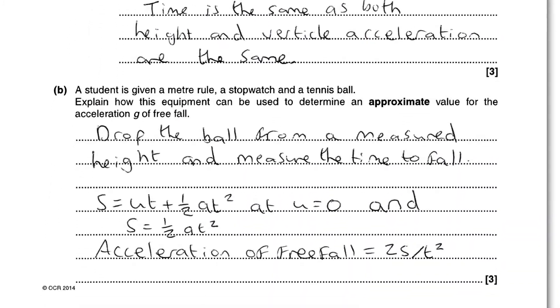Okay, so question 4B. A student is given a meter ruler, a stopwatch, and a tennis ball. Explain how this equipment can be used to determine an approximate value for the acceleration g of freefall. So this is pretty similar to the practical we did in class. It's basically measuring the height and the time and then using a simple SUVAT equation to determine the acceleration of freefall.